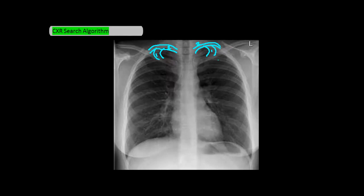From there it gets pretty easy. Continuing the count: three, four, five, six, seven, eight, nine, ten, eleven, twelve — and that's how you count ribs, drawing a line through the middle of each rib as you go.